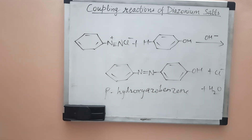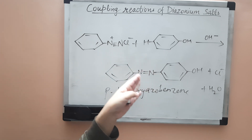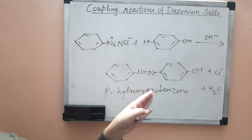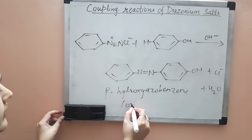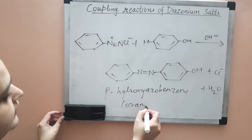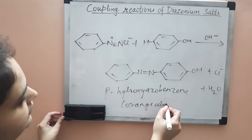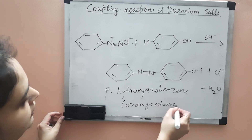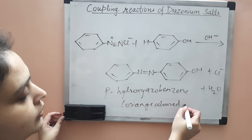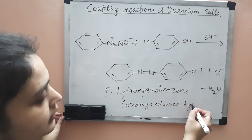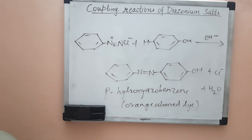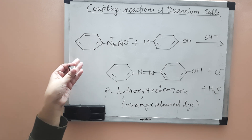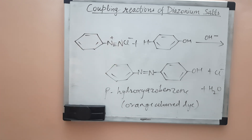Para-hydroxy azo benzene is colored — it is an orange colored dye. These azo compounds are colored and they are used as dyes.